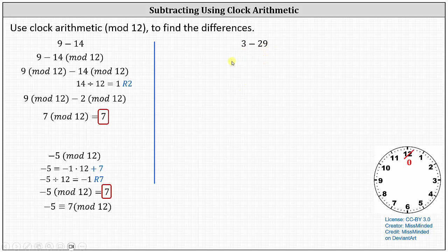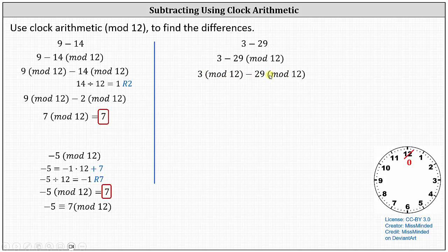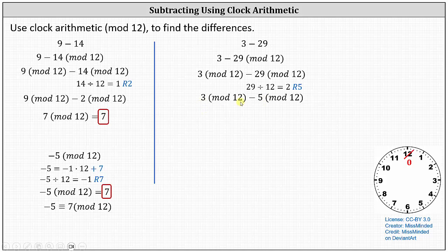For the second example, we have 3 minus 29, which can be written as (3 minus 29) mod 12, or 3 mod 12 minus 29 mod 12. Notice 3 mod 12 equals 3, and 29 mod 12 is the remainder when 29 is divided by 12. Since 29 divided by 12 equals 2 with remainder 5, the difference simplifies to 3 mod 12 minus 5 mod 12. Subtracting 5 from 3 gives negative 2 mod 12.